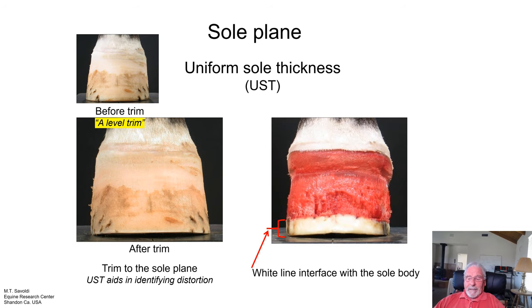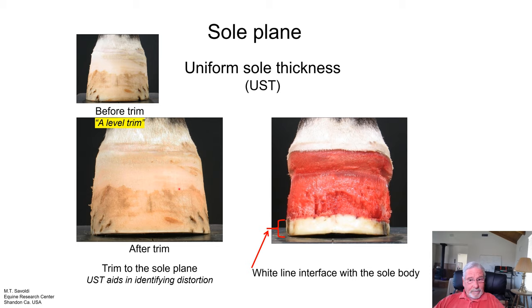We can remove the hoof capsule and take a close look. Here's our uniform sole thickness — it tells us that the sole is bent in this direction. The straighter the sidewalls, what does that force the sole to do? It has to bend somewhere, so it's bending upward. If this wall angle were to change and come out, this would straighten out. In most cases we can help this foot develop differently, but we have to get away from a lot of our traditional thinking.